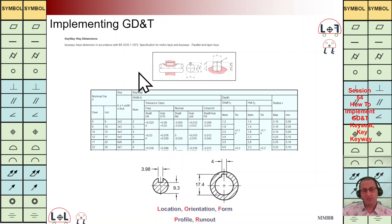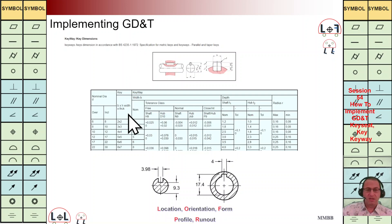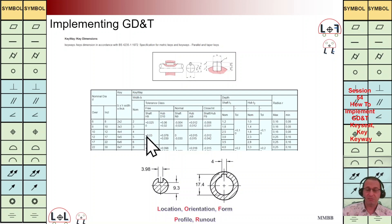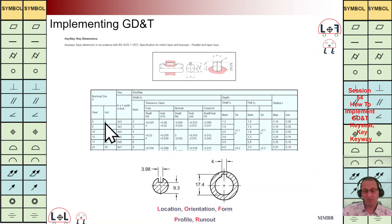The third standard for key assembly is BS4235-1, and based on the shape of the key we are going to use this standard. For example, whether it is free, normal, closed, or interference tolerance for that key assembly, we are going to use different tolerances — here we can see H9, D10, N9, GS9, and P9.